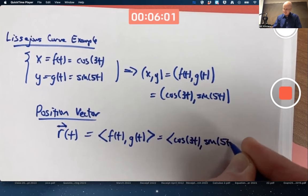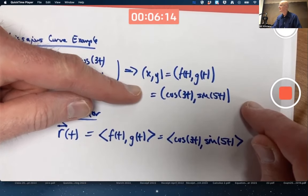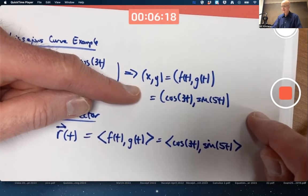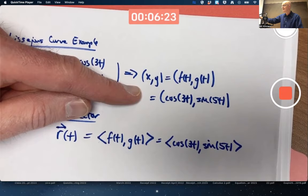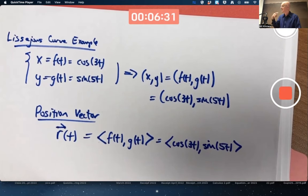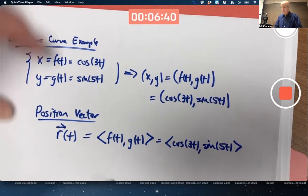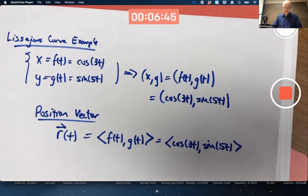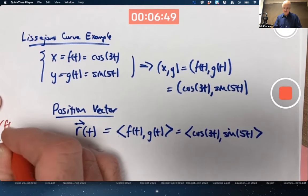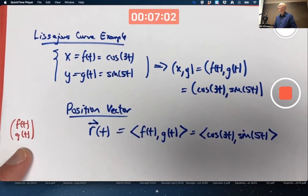Its components, and you typically do say components here instead of coordinates, are f and g, the same exact functions. In other classes like differential equations with linear algebra, we write our vectors as column vectors. That has a benefit for the purposes of multiplying a matrix times a vector.